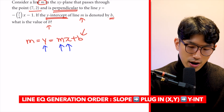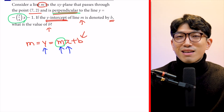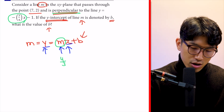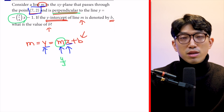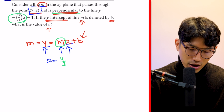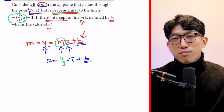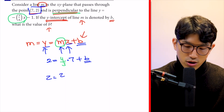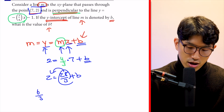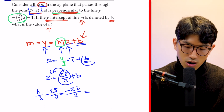Because the two lines are perpendicular, the slope of line M is the negative reciprocal: positive 4/3. Because the given point lies on line M, we plug it in: 2 = (4/3)(7) + B, which gives 2 = 28/3 + B. Moving 28/3 to the other side: B = 6/3 − 28/3 = −22/3.